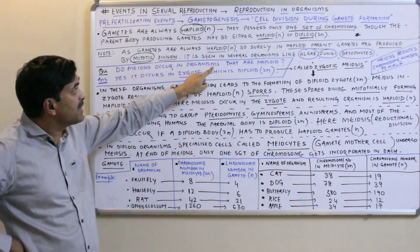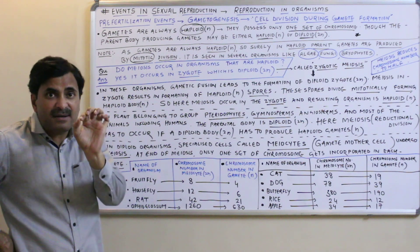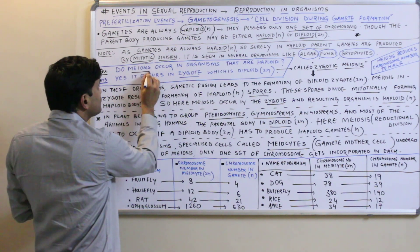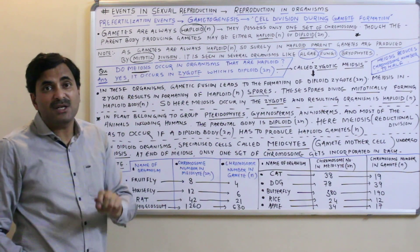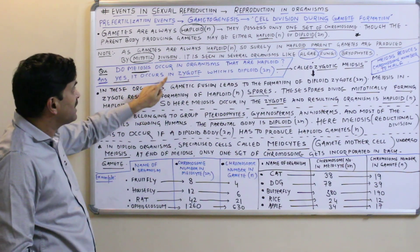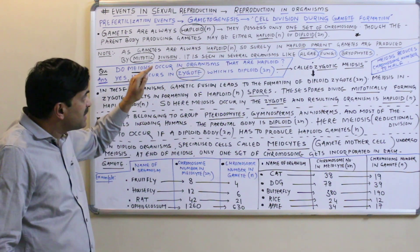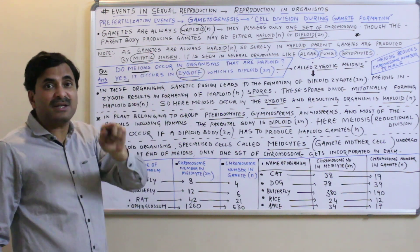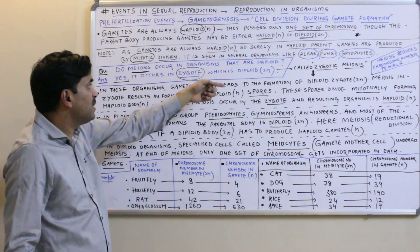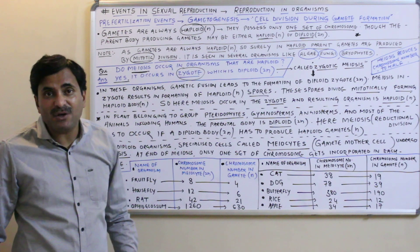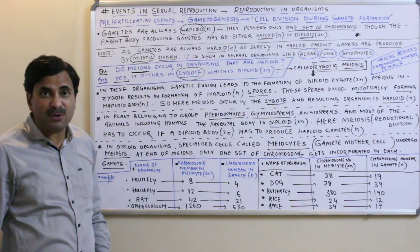A big question arises: does meiosis occur in haploid organisms? A haploid organism produces haploid gametes by mitosis, but does meiosis occur at all? Yes — it does occur, but it occurs in the zygote. The zygote is always diploid. So haploid organisms do undergo meiosis, but not at the time of gamete formation — they undergo meiosis when the zygote is formed. This is called zygotic meiosis.